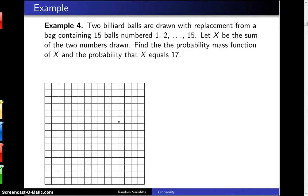Two billiard balls are drawn with replacement from a bag containing 15 balls numbered 1 through 15. Let the random variable X be the sum of the two numbers drawn. Find the probability mass function of X and the probability that X equals 17.